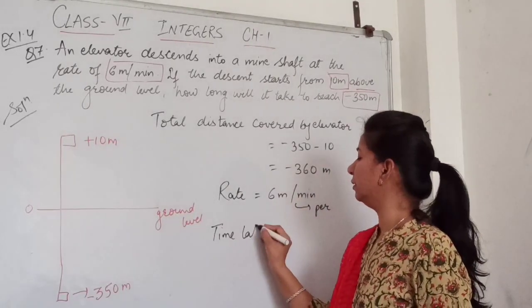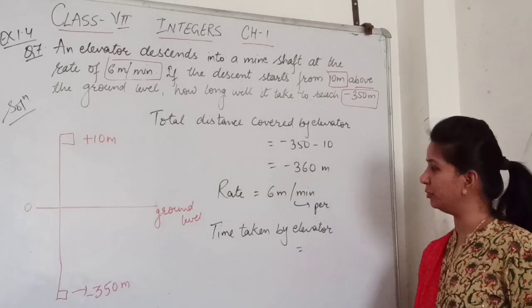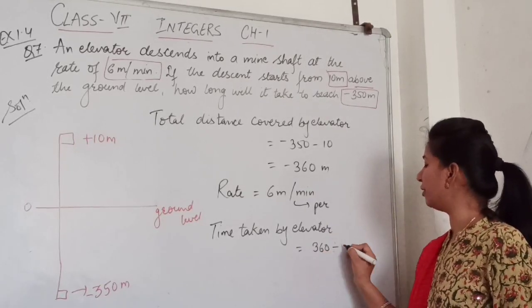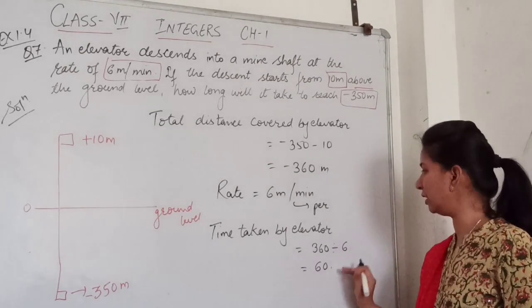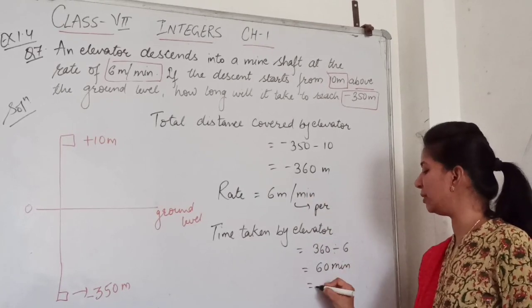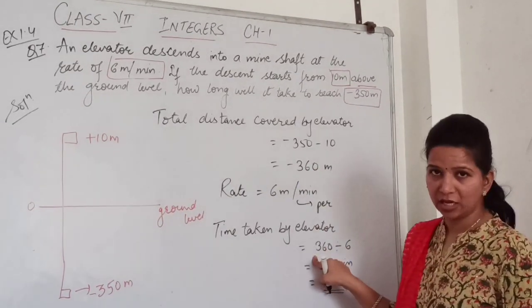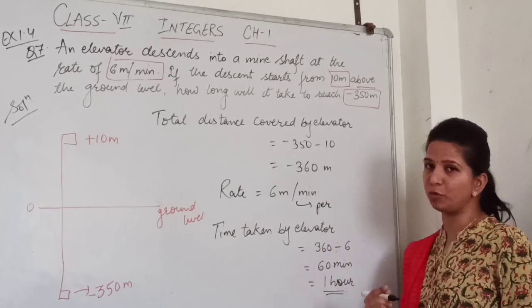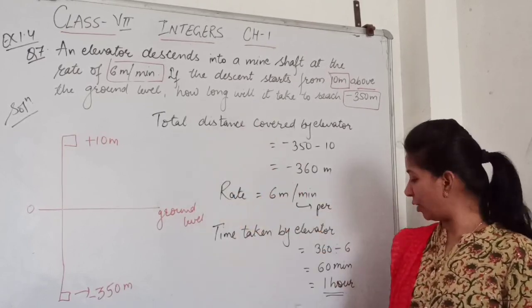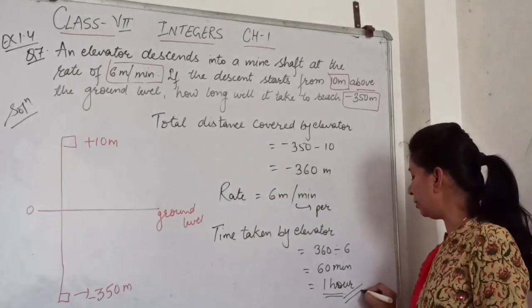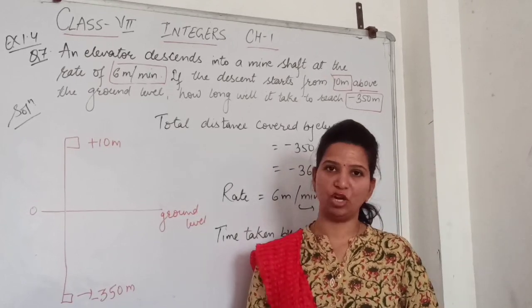Time taken by the elevator: simply divide 360 by 6, which equals 60 minutes. That means 60 minutes, which is 1 hour. Next question in the next video. Thank you.